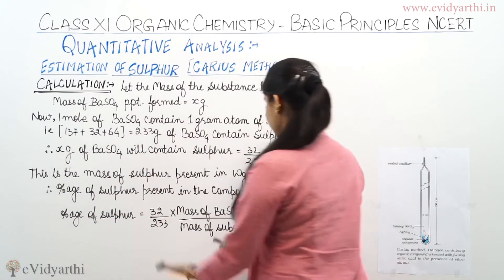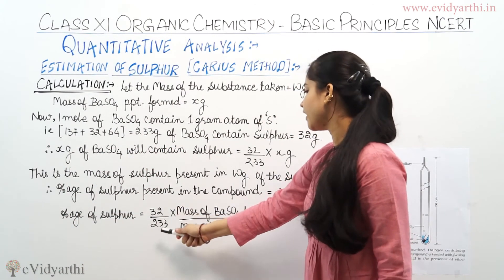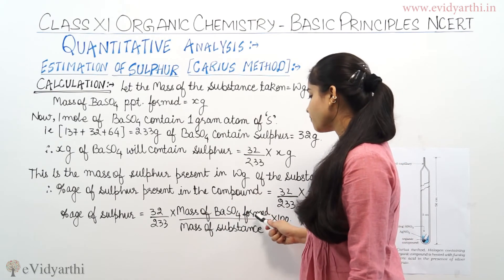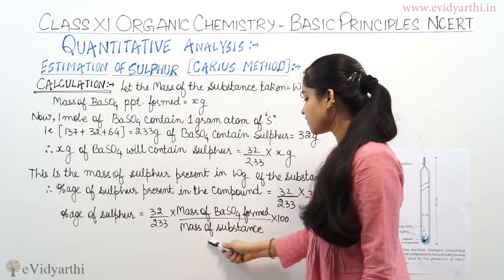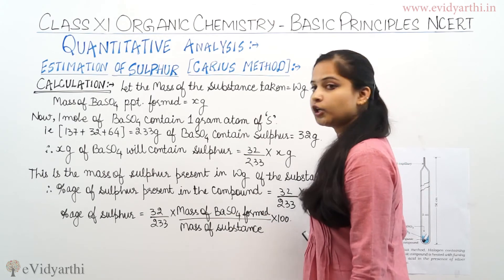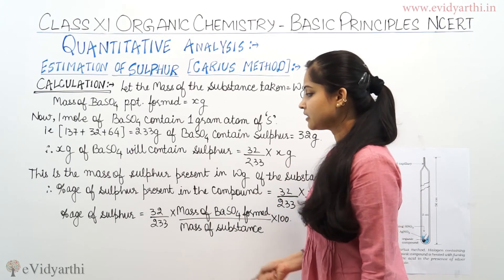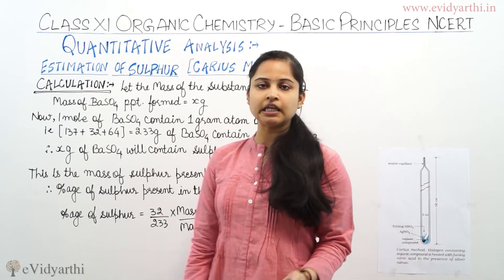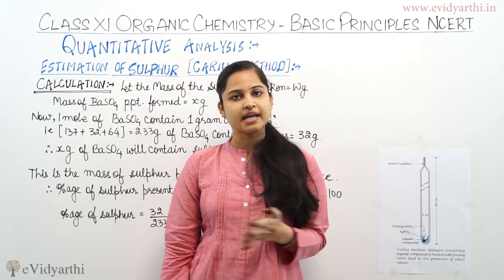Now, percentage of sulfur: 32 divided by 233 times mass of BaSO4 formed, which is x, upon mass of substance, which is W, times 100. This is the percentage calculation of sulfur in the given organic compound by Carius method.